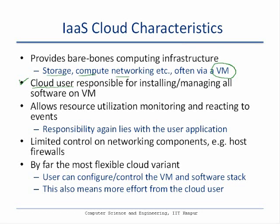IaaS also allows users to monitor for infrastructural events, such as the CPU on a virtual machine reaching a particular threshold. If you are running CPU-intensive applications, you may want to react once a threshold of CPU consumption is reached. IaaS clouds often provide mechanisms to notify users about these events and let them react — for example, setting up rules so that once a resource threshold is reached, additional resources are added automatically. For instance, you might add more memory once it reaches 90% of capacity. This is called auto-scaling, which we will explore further in subsequent lectures.